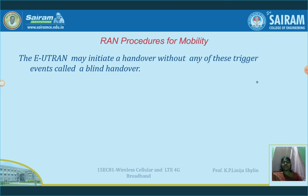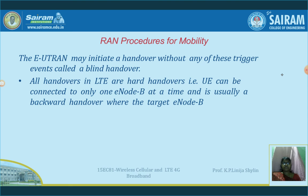Blind handover: the UE may initiate a handover without any of these trigger events; that particular handover is called a blind handover. There is also hard handover, where the user equipment can be connected to only one eNodeB at a time. It is usually a backward handover where the target eNodeB sends a request, accepts, and sends an acknowledgement — such types of handover sequences are referred to as hard handover.